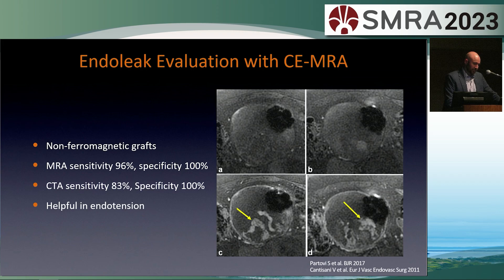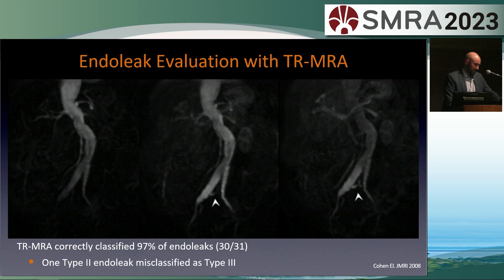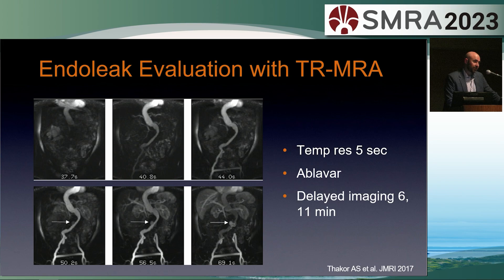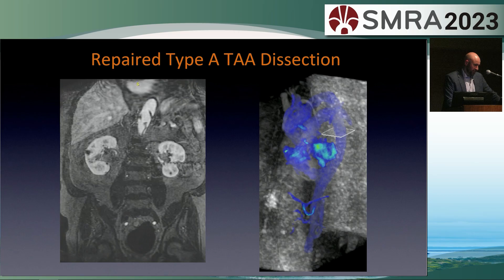Endoleak evaluation is something we were using MR for more frequently in the past. It's a very sensitive technique — perhaps overly sensitive — but it allows identification of suspected endoleak with great conspicuity. A paper from 2008 showed a high rate of endoleak detection and characterization with time-resolved MR angiography. A review paper described using ABLAVAR for time-resolved MR followed by delayed phase imaging to confirm the presence of an endoleak.